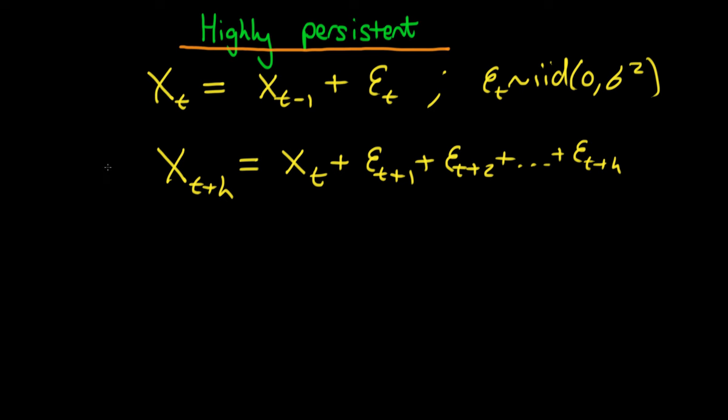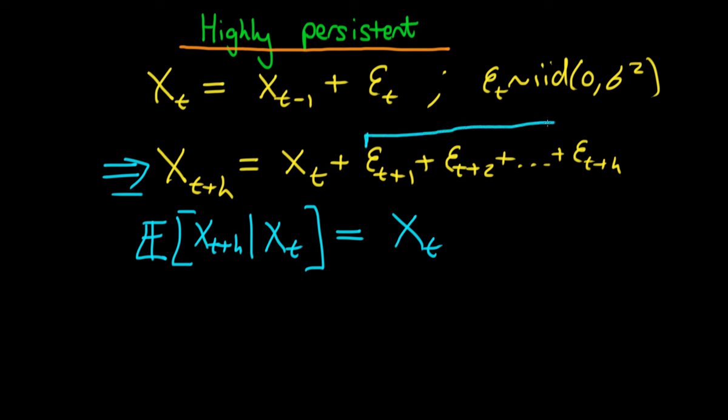How could I use Xt to come up with a prediction for Xt plus H? All we need to do is take the expectation of Xt plus H at time t. So at time t, we have a value of Xt already. Applying the expectations operator to both sides, I find that on the right hand side, all I'm left with is Xt, because all of these error terms at time t are expected to be zero.